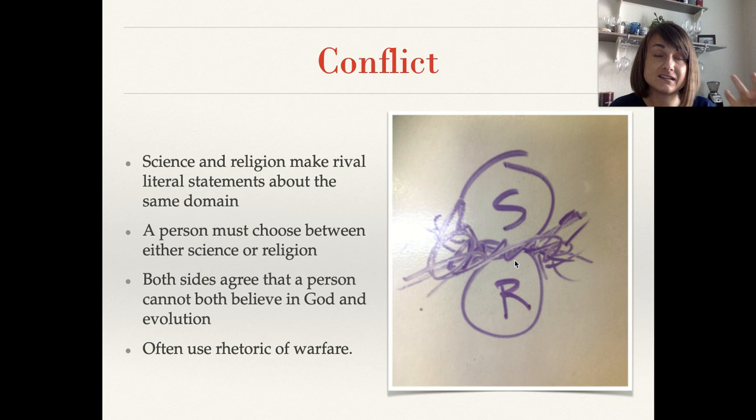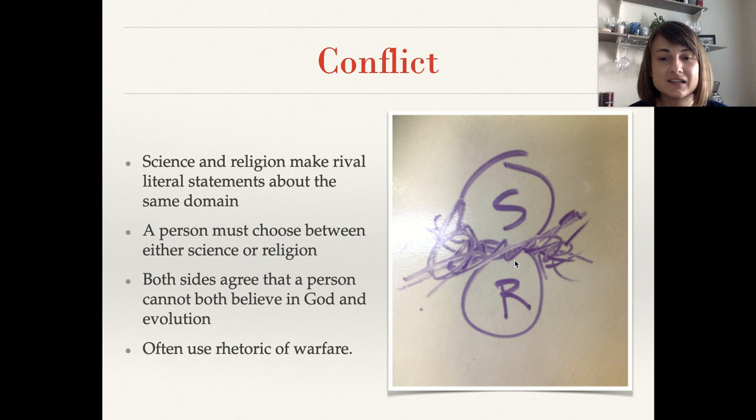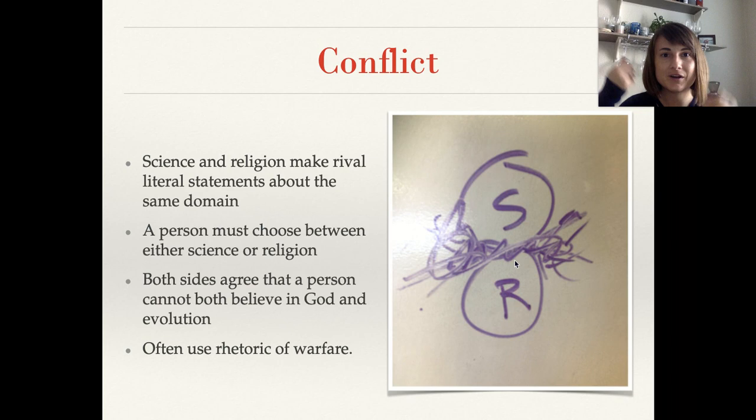That means a person is going to have to choose between believing and accepting science or religion. Both sides agree that a person cannot believe in both God and evolution. Evolution is the most classic example — either you accept evolution or you accept God and what the Bible is saying, but there's no middle ground; you can't have both. People who ascribe to the conflict model often use a rhetoric of warfare — that there's a conflict or a battle between science and religion, that it's one or the other.